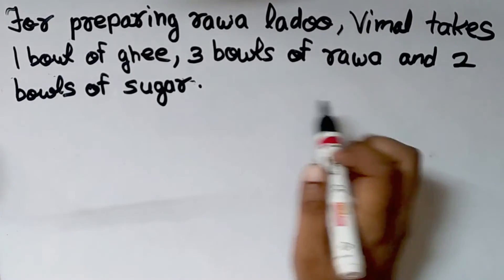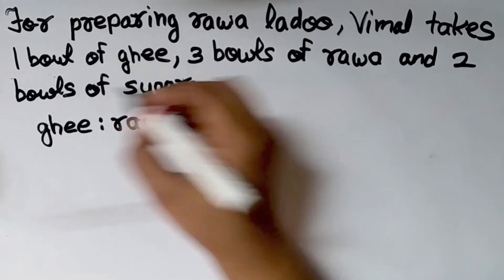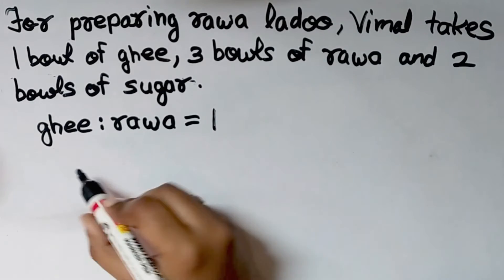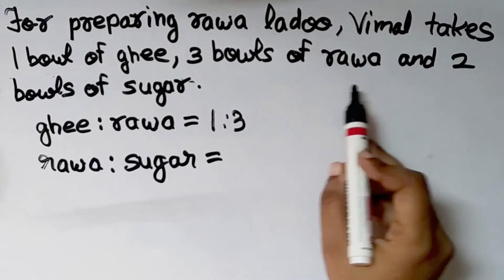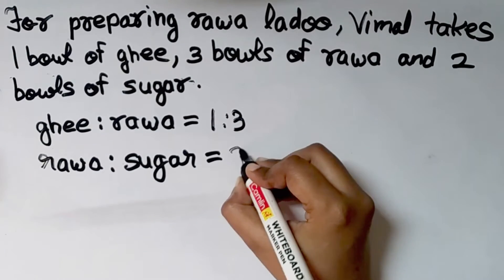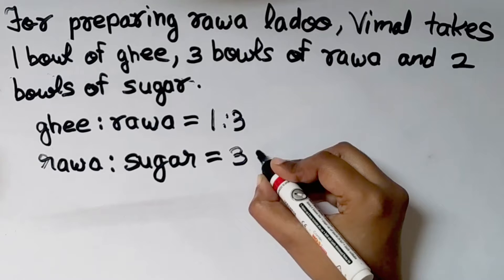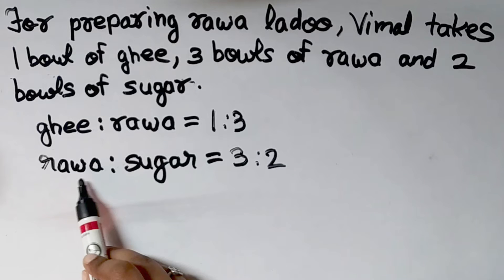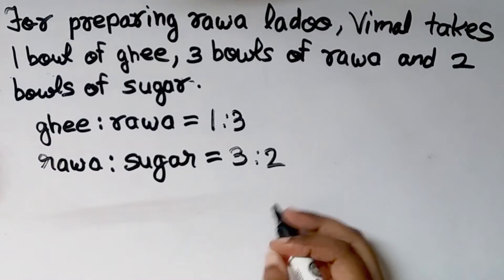We will see how ratio of 3 numbers is used. For preparing rava laddu, Vimal takes 1 bowl of ghee, 3 bowls of rava, and 2 bowls of sugar. The ratio of ghee to rava is 1 is to 3. For 3 bowls of rava, she takes 2 bowls of sugar, so the ratio of rava to sugar is 3 is to 2. The second term of the first ratio and the first term of the second ratio is the same, that is rava, and the value of rava is 3 in both ratios. So rava is common in both ratios and we can write both in ratio of 3 numbers.